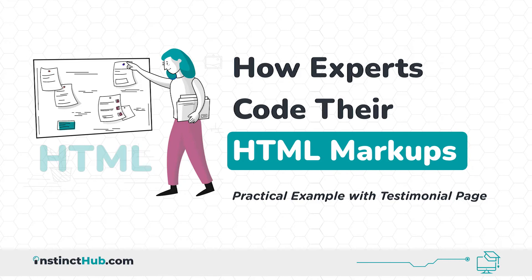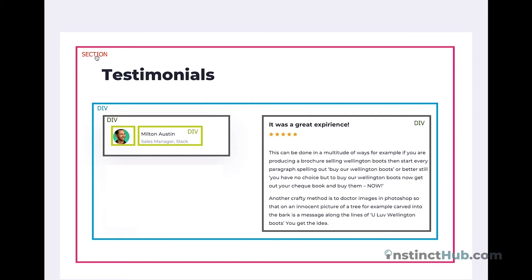Let's implement our HTML structure. Taking a look at it again, I tried to label the boxes that we drew. We're going to have a section to wrap it all, then inside the section a div container to wrap the content. Each content segment will have a div, and then we have another div inside. So let's implement the same thing.